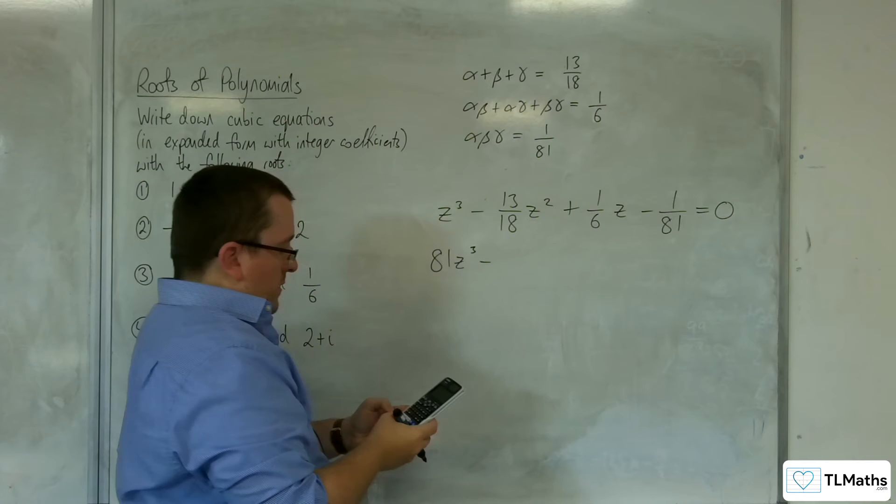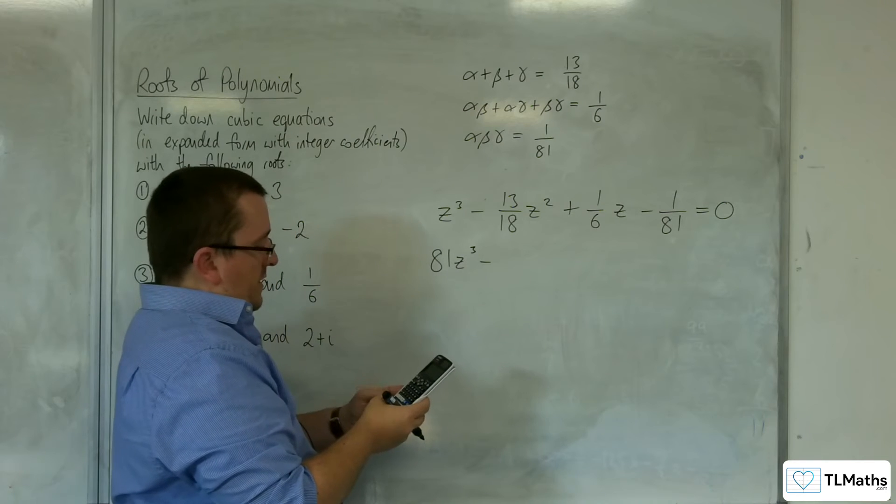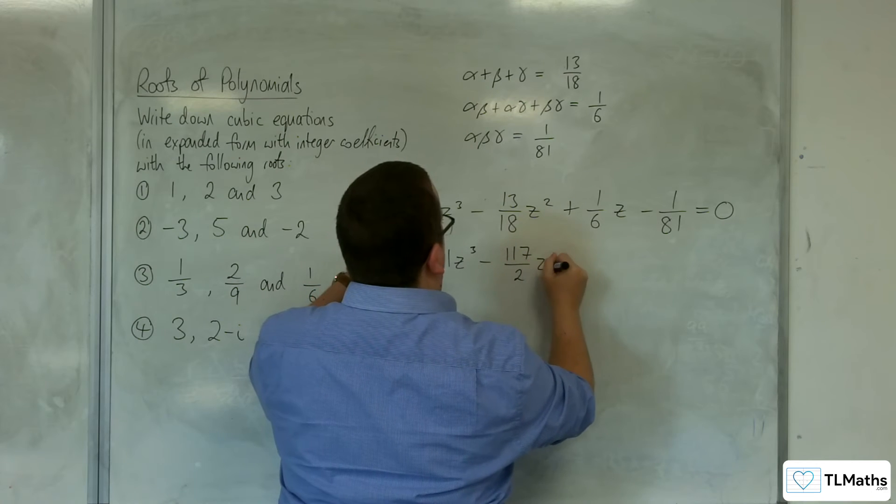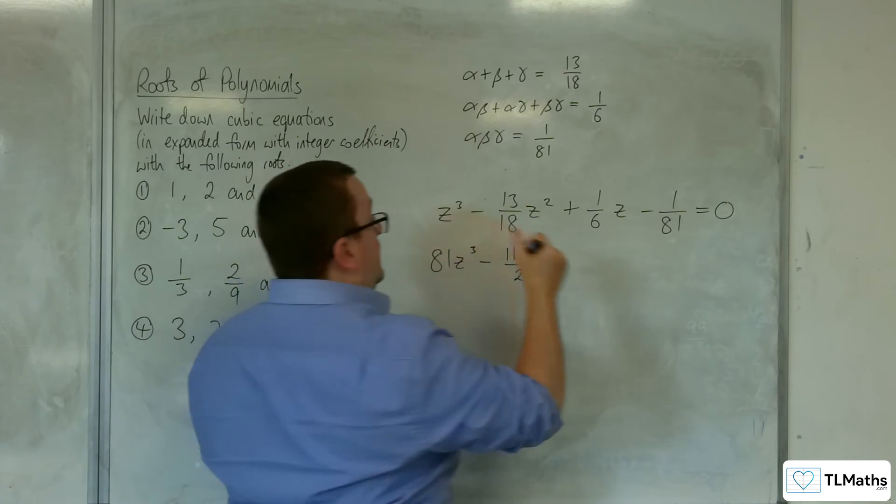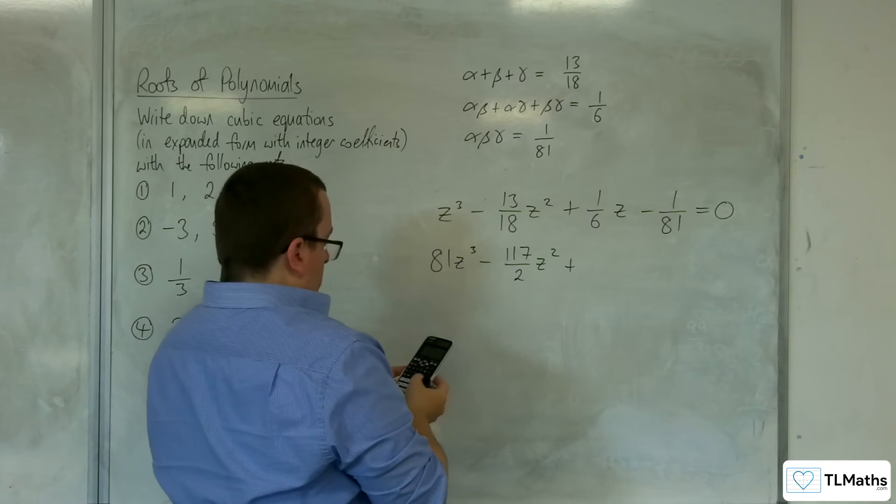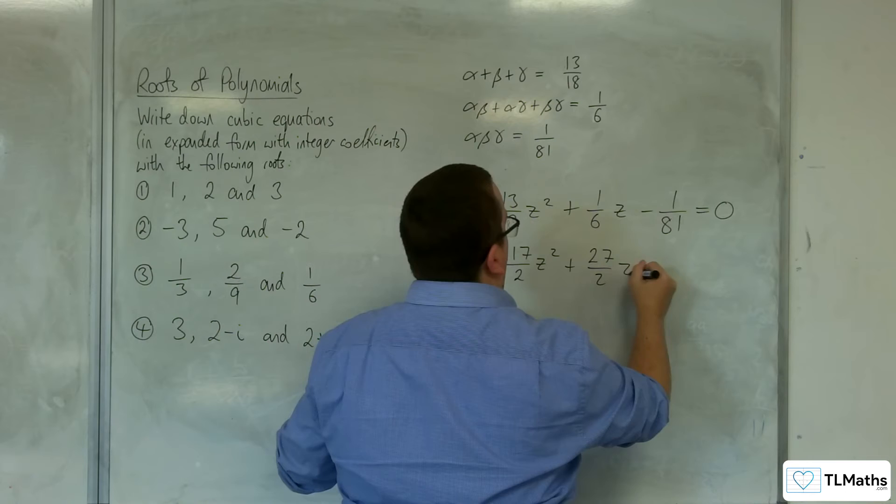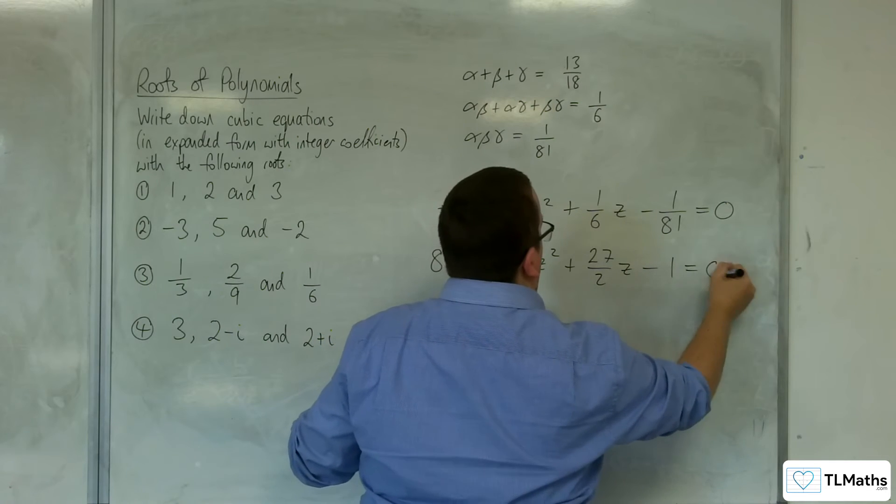Then 81 times 13/18 is 117 halves z squared, plus 27 halves z, take away 1, equals 0.